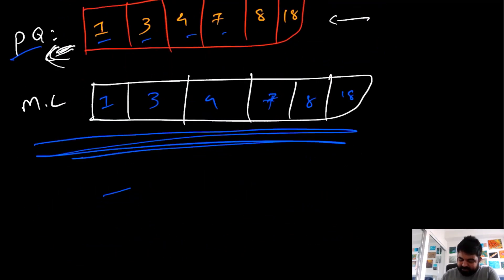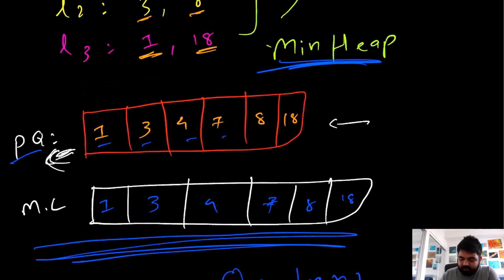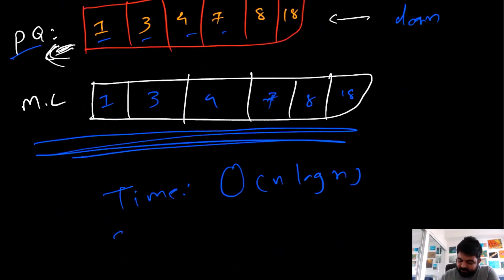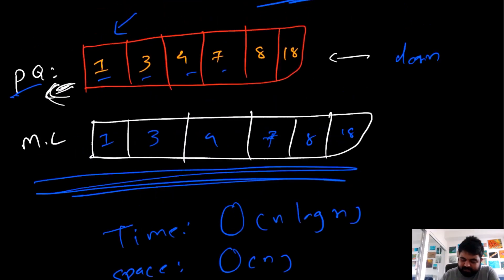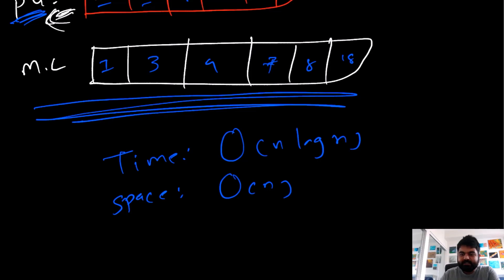The time complexity for this approach is O(N log N), because inserting each of the N elements into the priority queue takes O(log N) time. The space complexity is O(N) because we need the additional priority queue. Let's look at the coding.